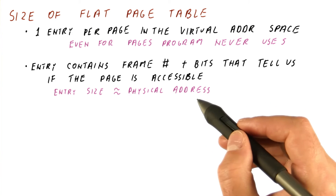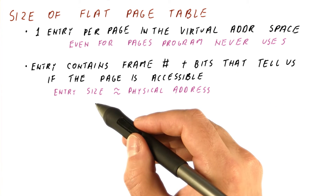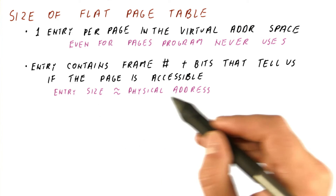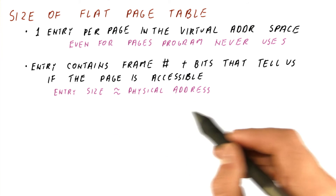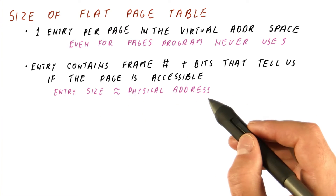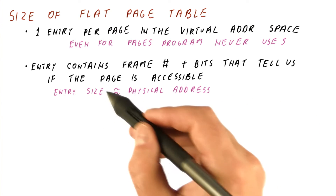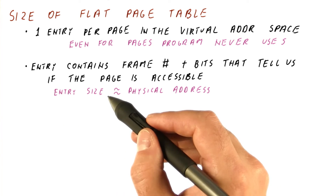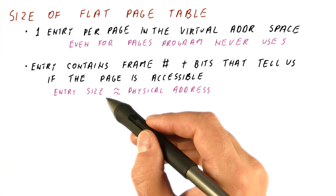So overall, if we have a 32-bit physical address, probably the entry size in the page table will be 32 bits. If we have a 64-bit physical address, probably the entry size will be 64 bits.